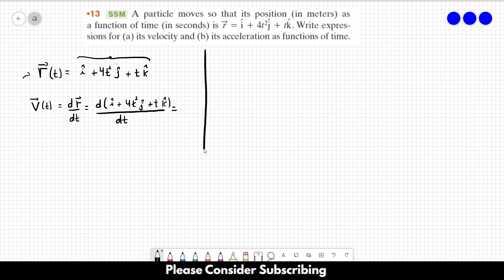So this derivative over there is equal to 8t in the j direction plus k, 1k, 1 in the k direction. So this is the function of the velocity as a function of time.